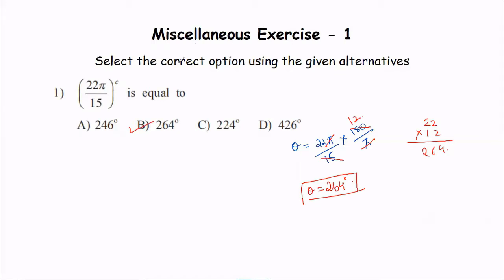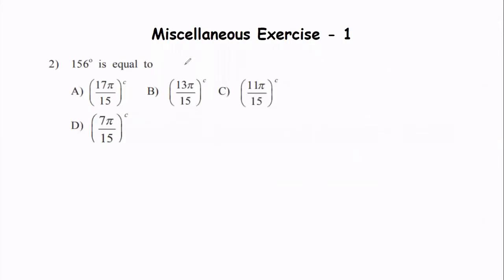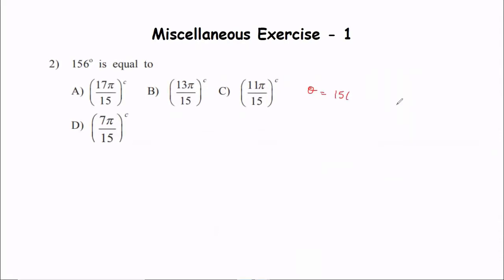Second question: 156 degrees is equal to what? We need to calculate in terms of radians. We convert: 156 degrees multiplied by π/180 degrees. Let's start with the cancellation process.